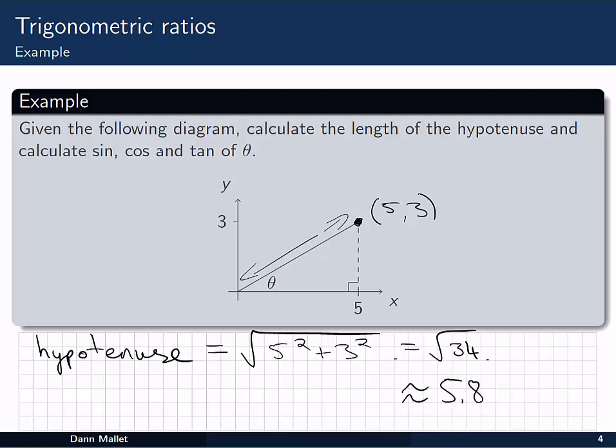Now for sine, cosine, and tan of theta, we need to remember that sine of theta is y over r. That's the opposite side over the hypotenuse. Cos of theta is x over r, and tan of theta is y over x. And then it's just a matter of putting those sides and their length values into these equations.